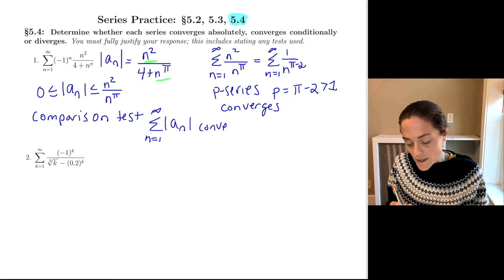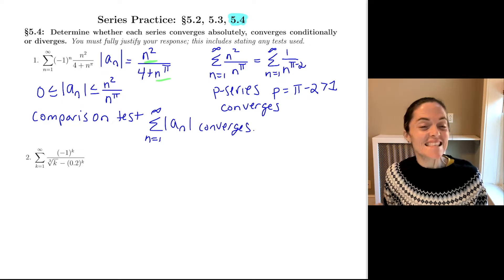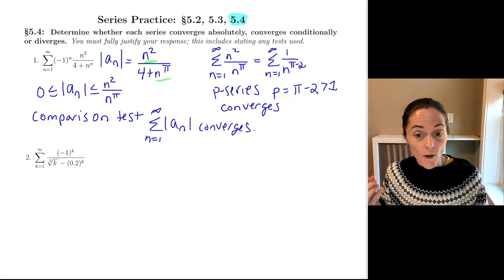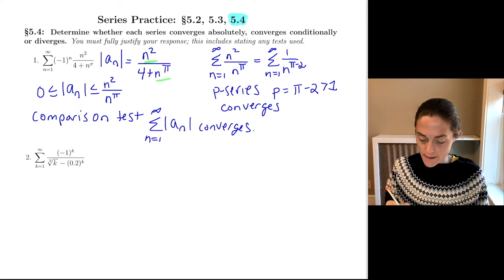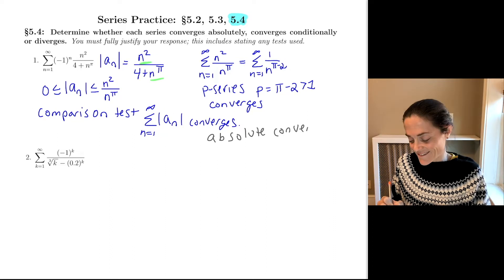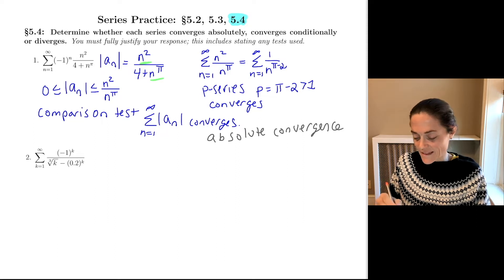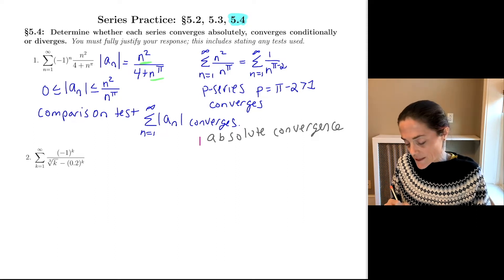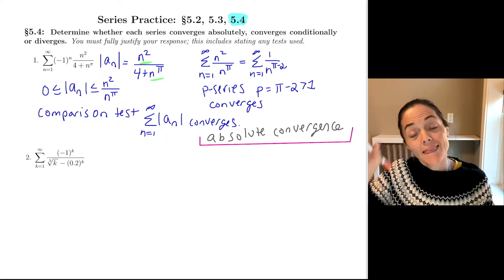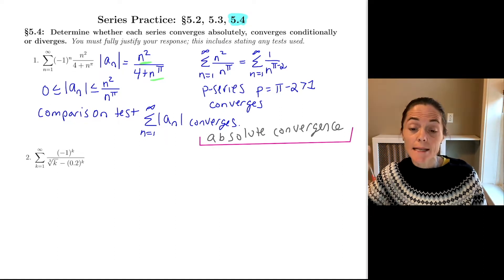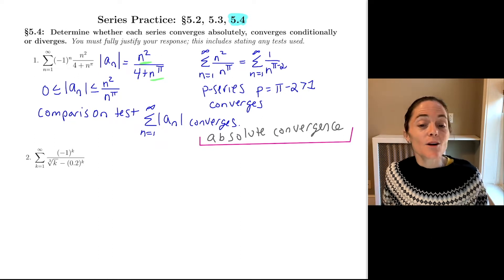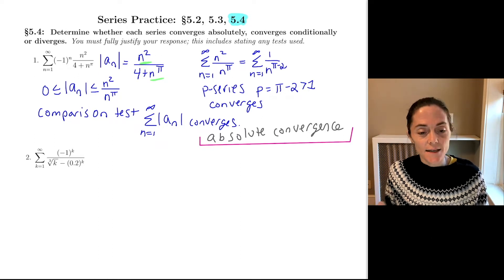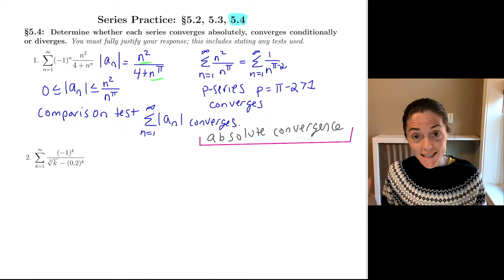This answers the question: we have absolute convergence. When a series converges absolutely — namely, when I look at the absolute value of the terms and that series converges — I don't need an alternating series test. I have finished this problem.